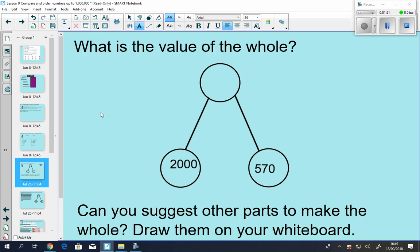Here we have a part-whole model. What is the value of the whole? Remember that part-whole model is this part added to this part makes the whole, which is up here. So if we add them together, we would end up with 2,570. Can you suggest any other parts to make the whole? Feel free to give those a try.